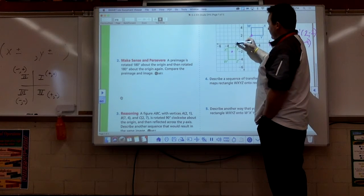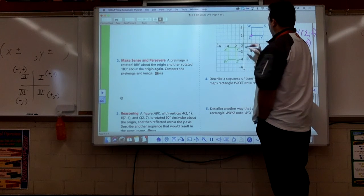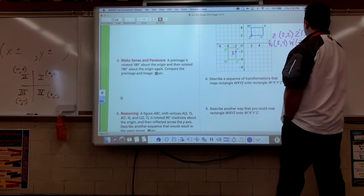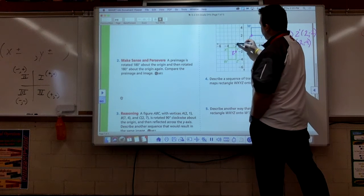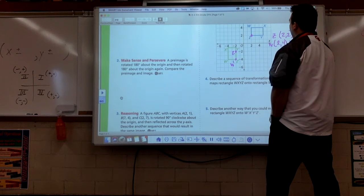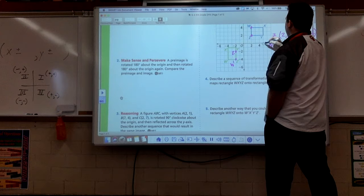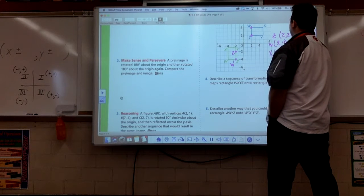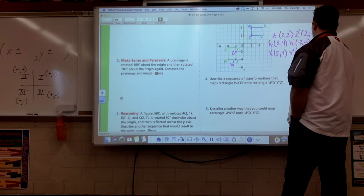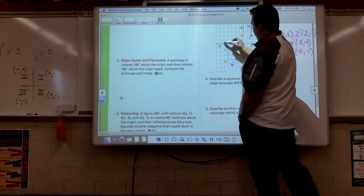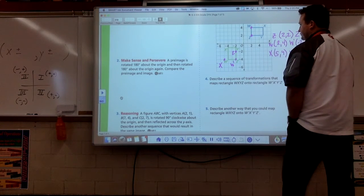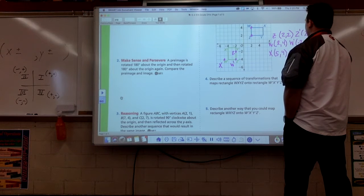If I rotate 180 degrees, Z is now at negative 2, negative 2. So Z becomes here. W is at 2, 4. Again, I'm just applying our rules. W prime would be at negative 2, negative 4. Wait a second, somebody didn't yell at me. Negative 2, negative 2. I apologize, here's Z, everybody. W is at negative 2, negative 4. There is W.